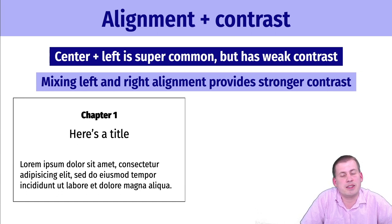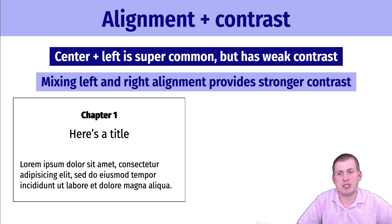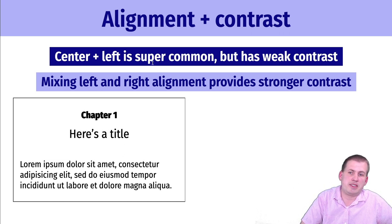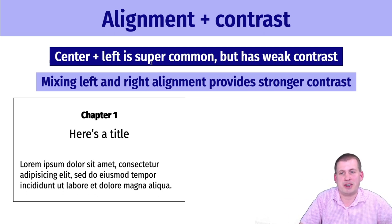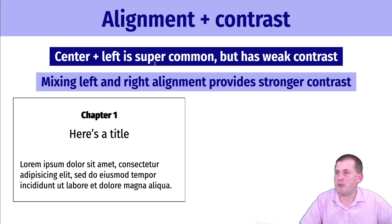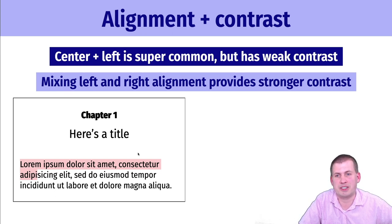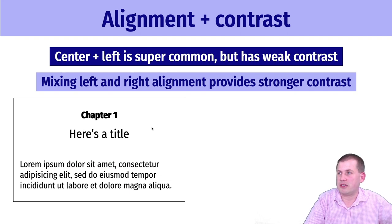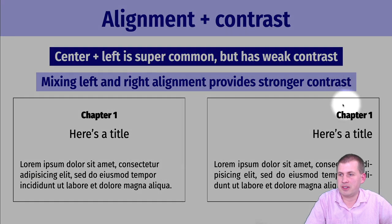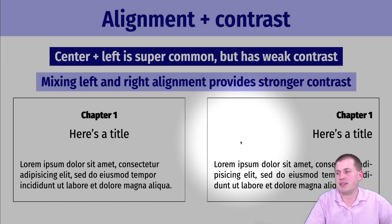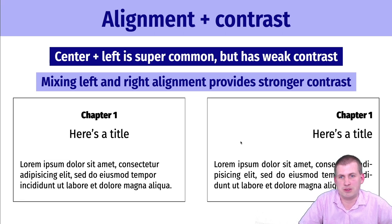You can also combine different principles. One very common example of contrasting alignment is what you all do in class papers — centering your headings and left-aligning your text, as prescribed by the Chicago Manual of Style or APA. That's actually contrast in alignment, but it breaks the 'don't be wimpy' principle of contrast. A way of adding stronger contrast with alignment is to have some things be right-aligned and some things be left-aligned — that provides much stronger contrast.